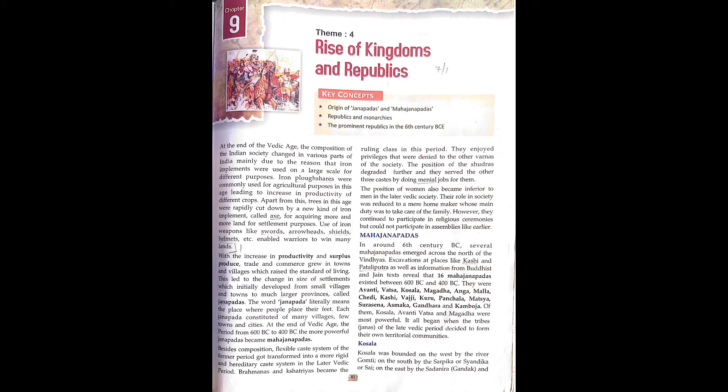Kosala was bounded on the west by the river Gomti, in the south by the Sarpika or Sandika or Sayan, on the east by the Sindhanaya Gandhaka, and in the north by the Nepal hills. Ayodhya, Shravasti, and Saket were the three important cities. Kosala also included the tribal republic territories of Shakya of Kapilavastu, the birthplace of the Buddha. The Kosala region gave rise to the Shramana movements, including Jainism and Buddhism.